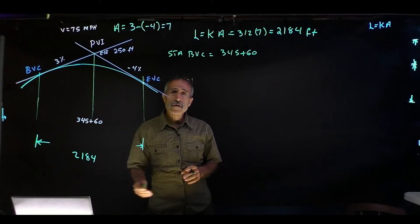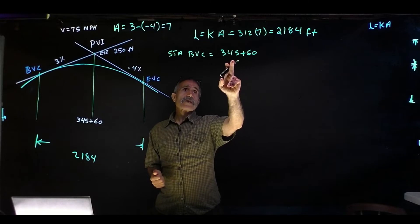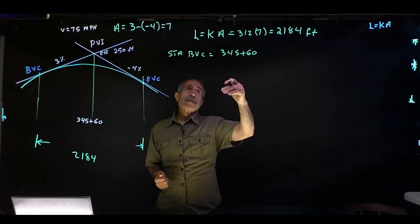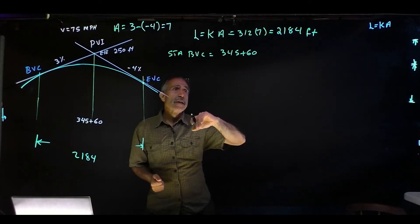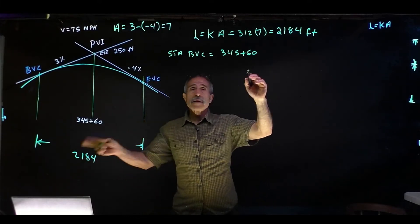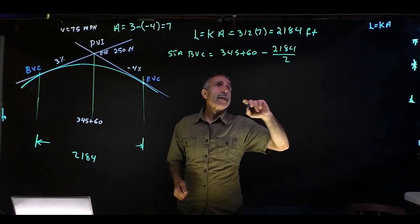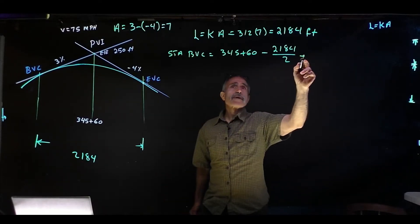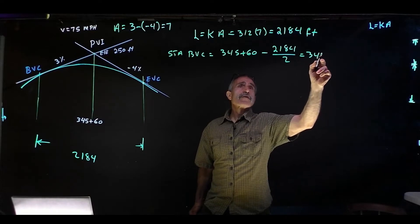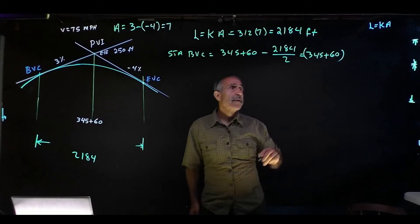Remember, these are stations. Station 345, each station is 100 feet. So this is basically 345 times 100 plus 60. And 2184 divided by 2, so that's going to be minus 2184 divided by 2.